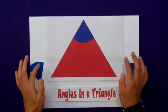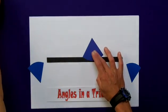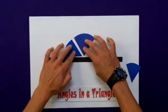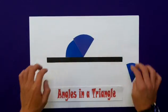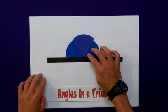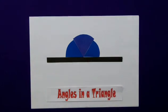If I take my three angles, remove my triangle, I have my straight line. Placing these carefully on that line, all three of them should make a nice neat fit, ensuring that they add up to 180 degrees.